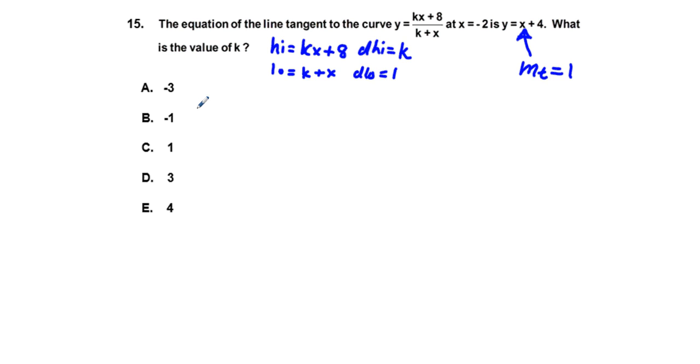And so, our y prime is going to be equal to our low, which is k plus x, times the derivative of the high, which is k, minus the high, which is kx plus 8, times the derivative of the low, which is 1, all over this low squared, which is quantity k plus x squared.